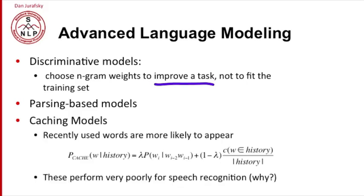Or we can use caching models. In a caching model, we assume that a word that's been used recently is more likely to appear again. So the cache probability of a word given some history, we mix the probability of the word with some function of the history, how often the word occurred in the history. And we weight those two probabilities together.